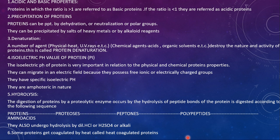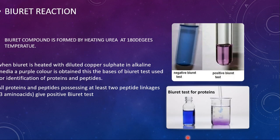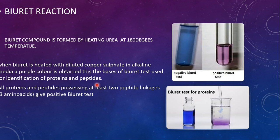Another important topic is the biuret reaction. Biuret compound is formed by heating urea at 180 degrees centigrade. When biuret is heated with diluted copper sulfate in an alkaline medium, a purple color is obtained. This is the basis of the biuret test, used for the identification of proteins and peptides.